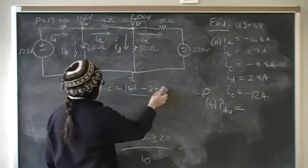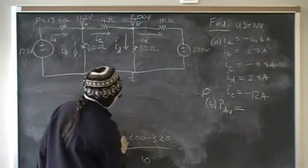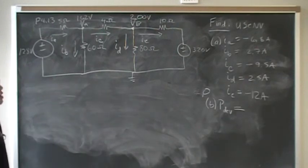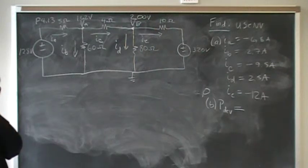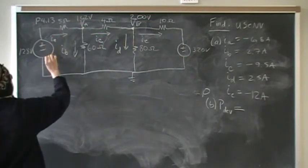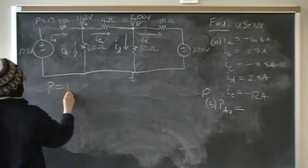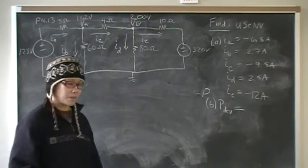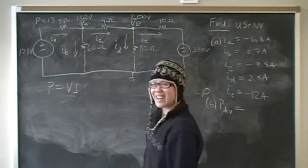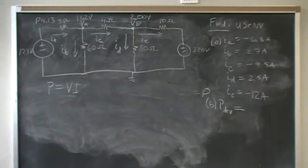For part B, we want to know how much power is being developed by the voltage source, or by this entire circuit, how much power is being developed. So there's two voltage sources, and we're going to take a look at those. We have, remember, P is equal to VI.